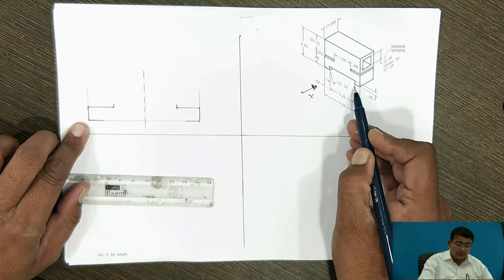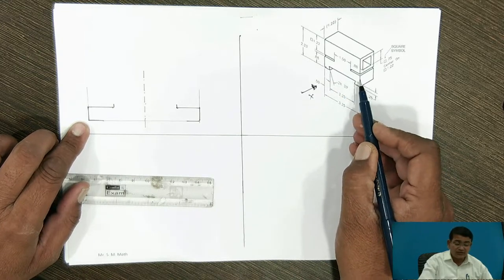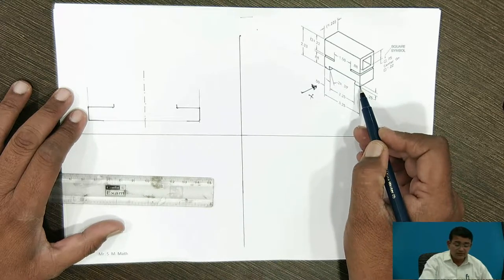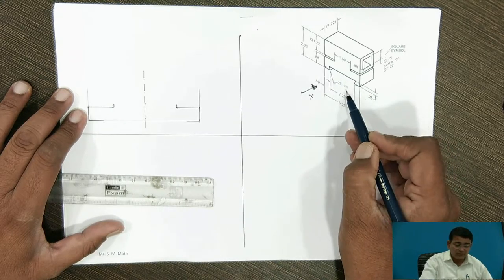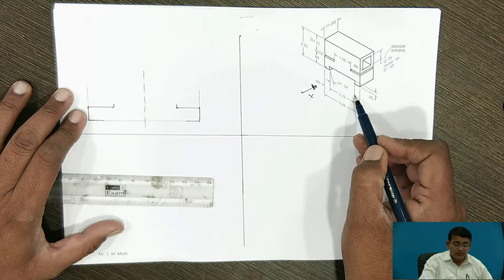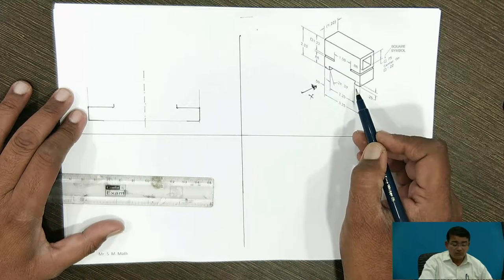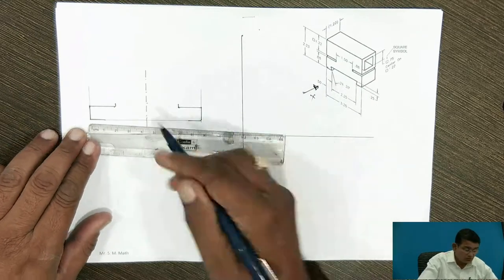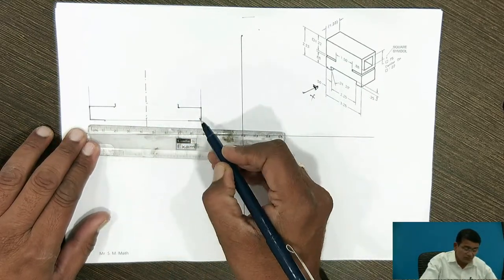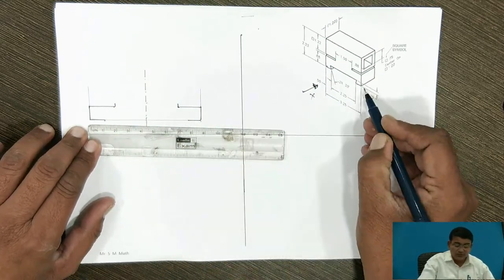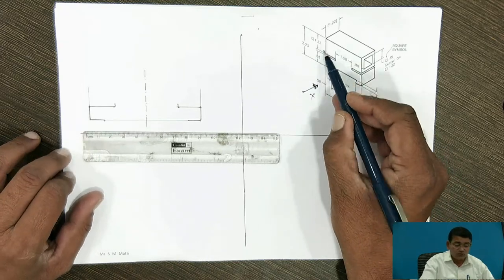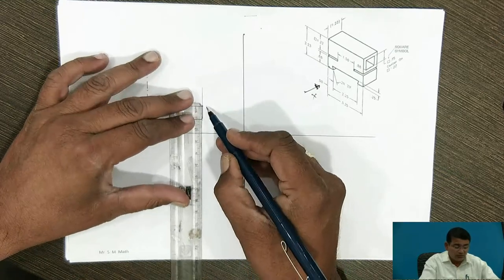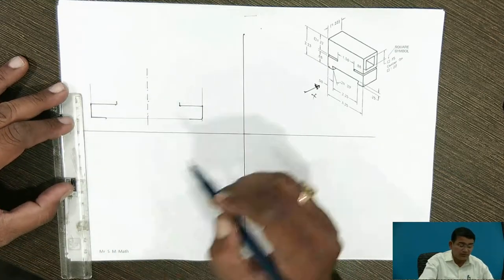There is a gap because it is a sliding guideway. The total length is 3.25 and this gap is 2.25, meaning a 10 mm gap — 5 mm from the left and 5 mm from the right side. The vertical height: total height is 2.23 and the vertical height is given as 0.88. I am drawing 0.88 on each side.